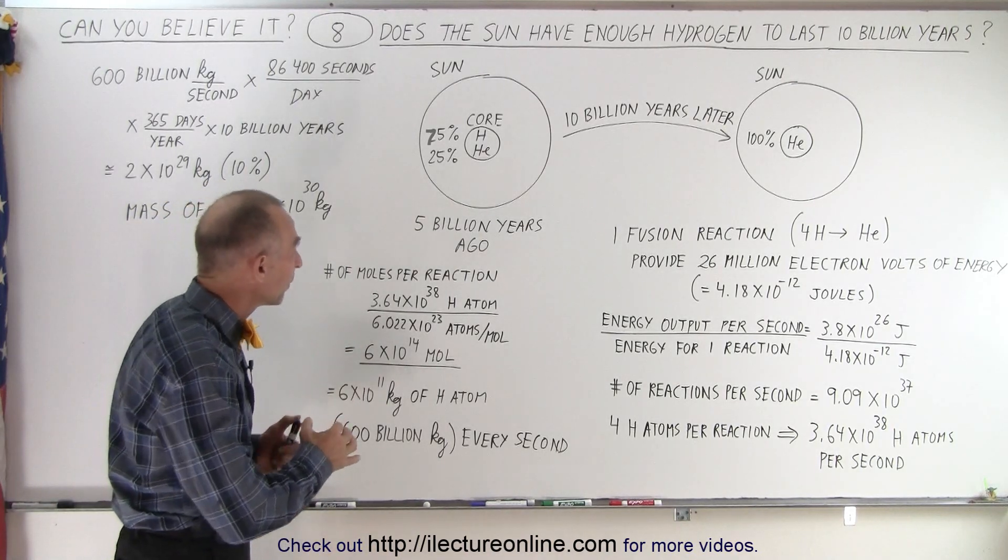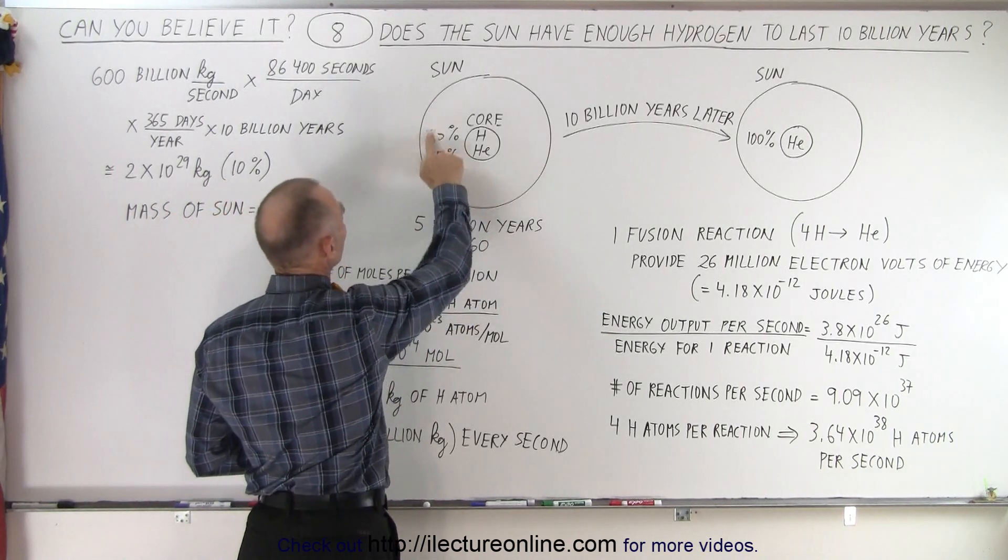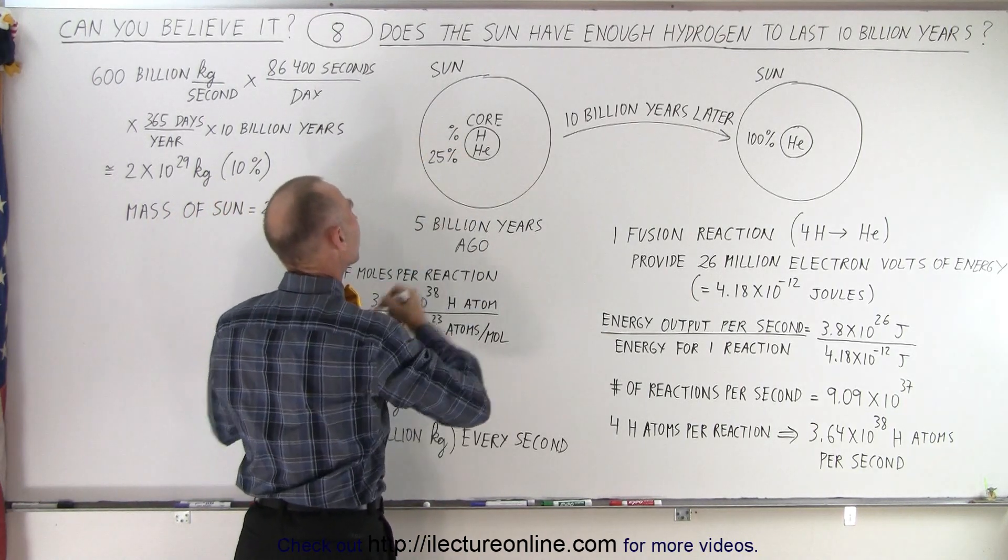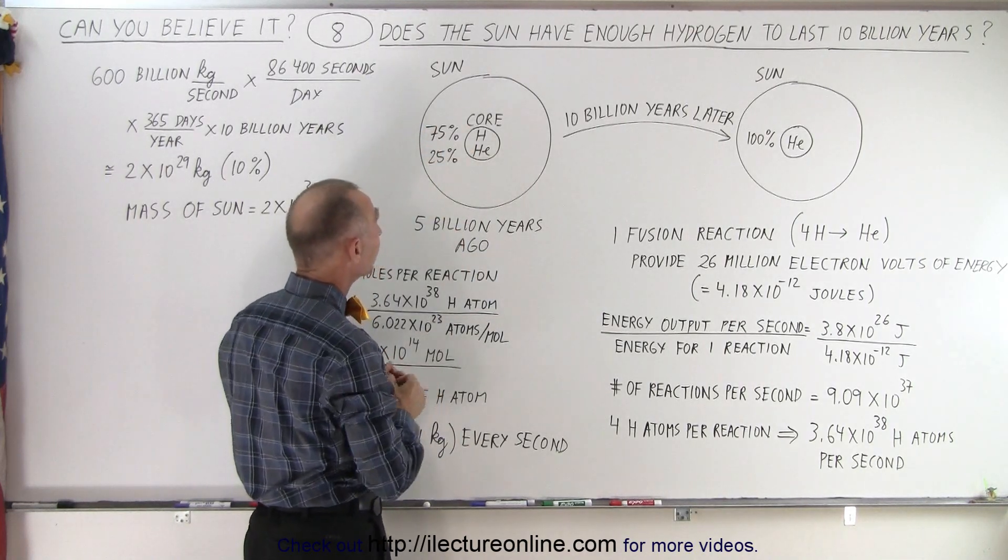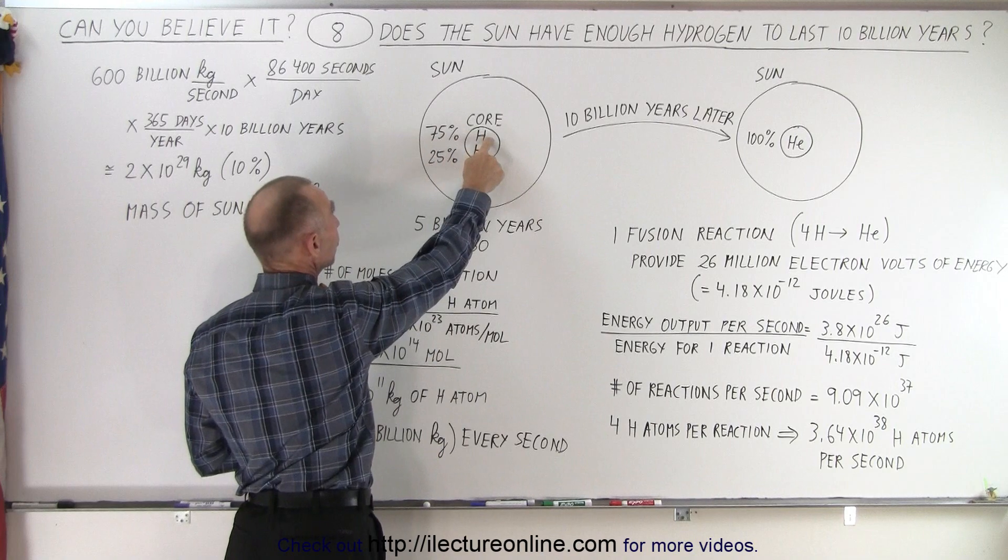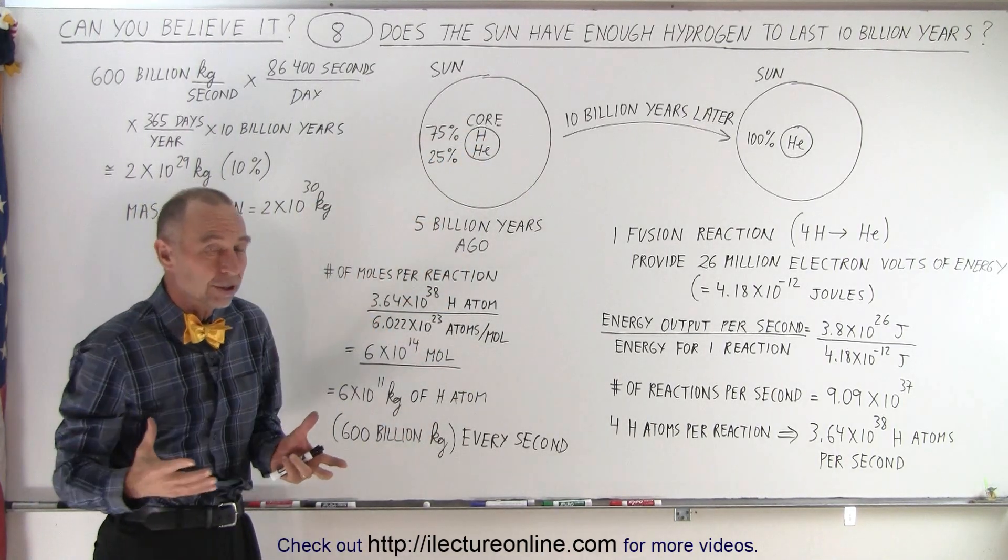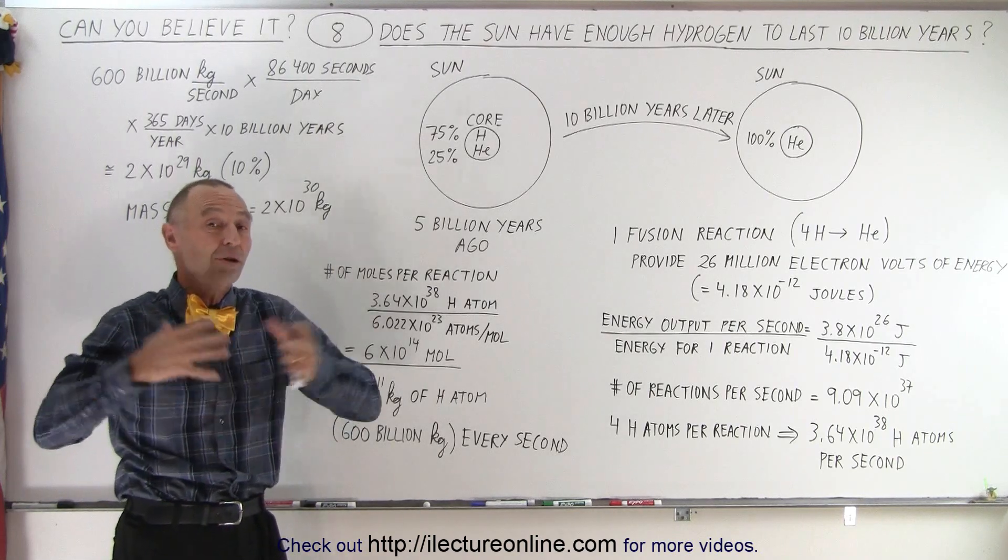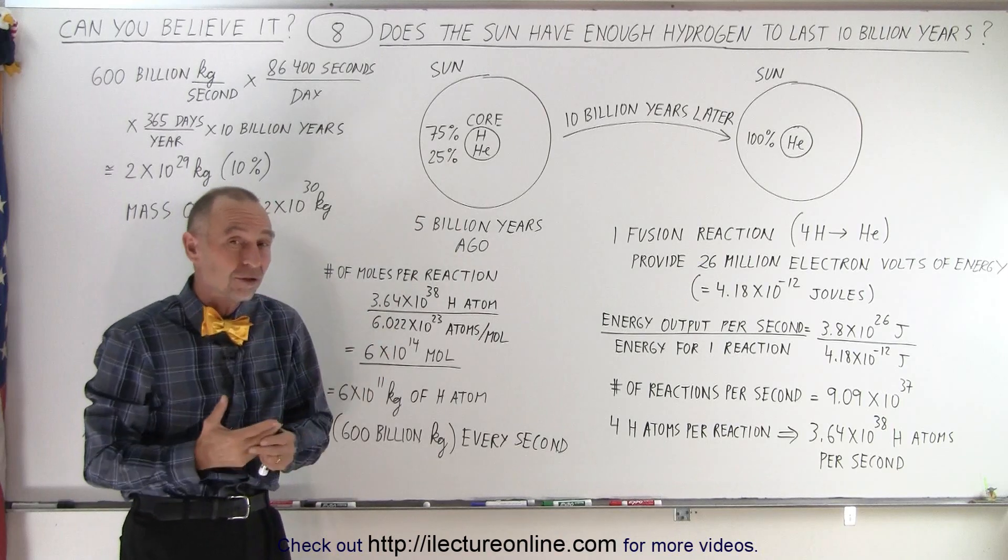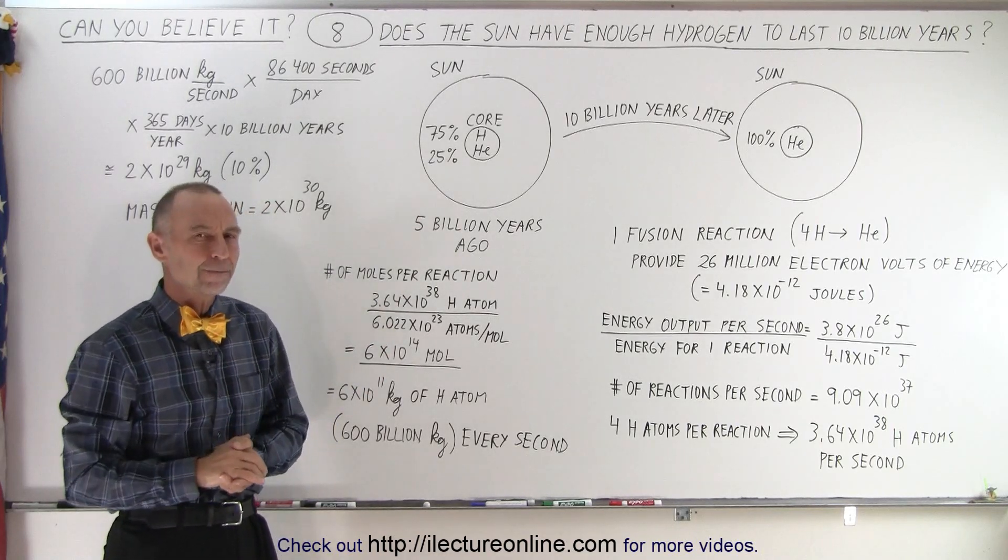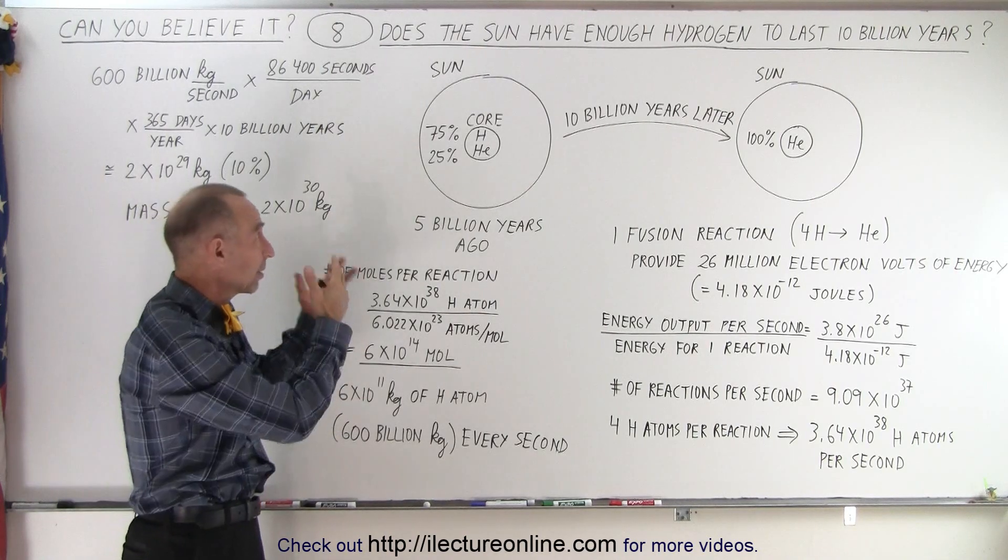When the Sun was first formed, it consisted of about 25%, this is wrong, this should be 75%. So the Sun consisted of 75% hydrogen and 25% helium, because that's how all stars started. As a matter of fact, that's what the consistency of the universe was when the universe was first formed. It was about 75% hydrogen and 25% helium. So every star, made in every galaxy, had that consistency.